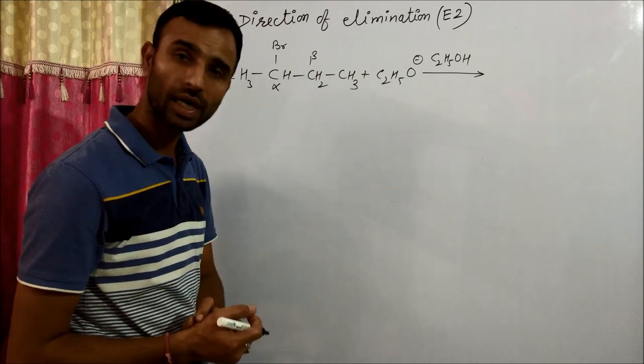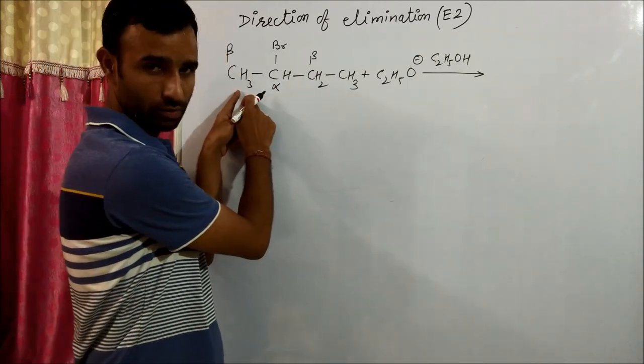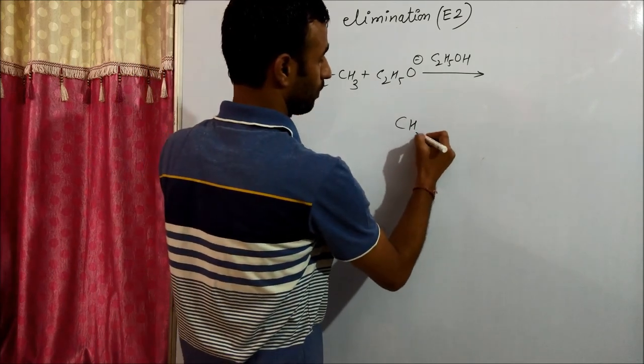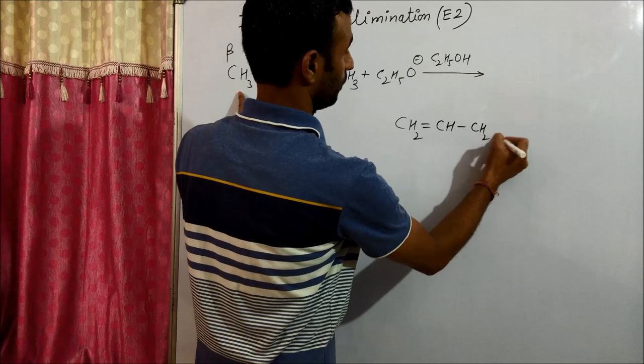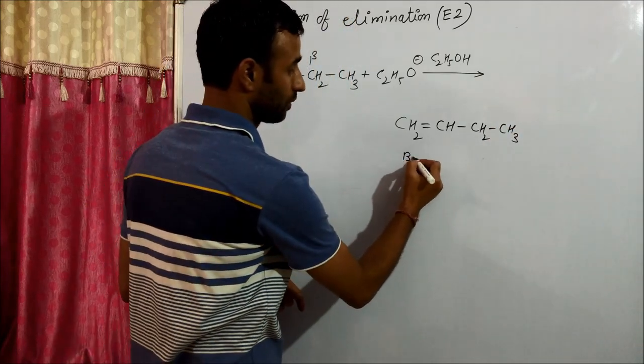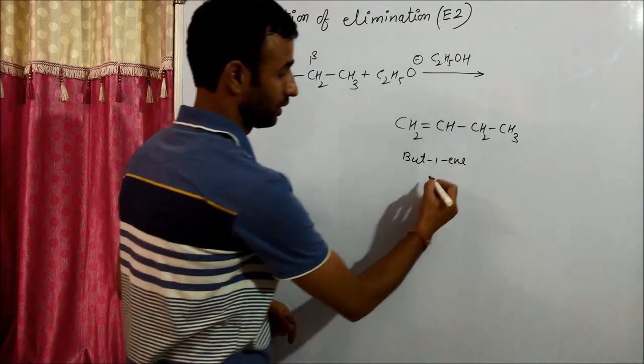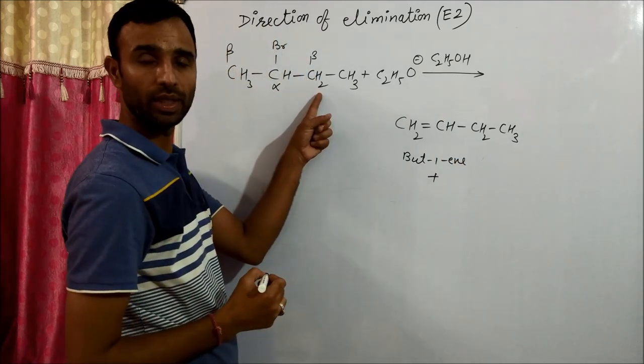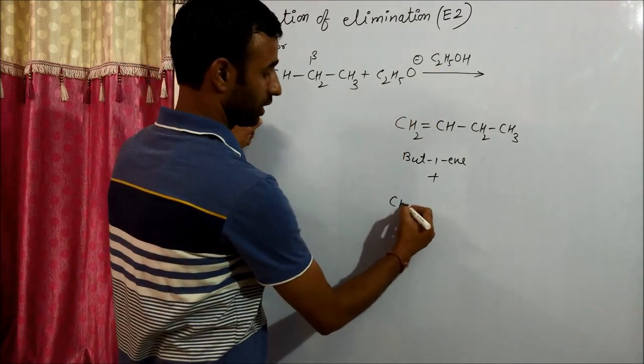In this case, we have carbon attached to three hydrogens, carbon attached to two hydrogens and one methyl. Now if we remove this hydrogen, we get this product. This is but-1-ene.